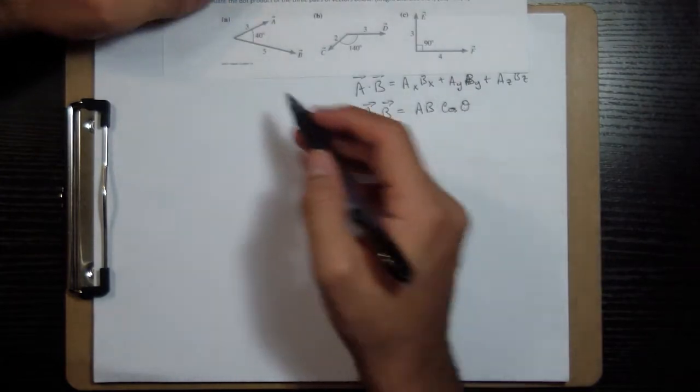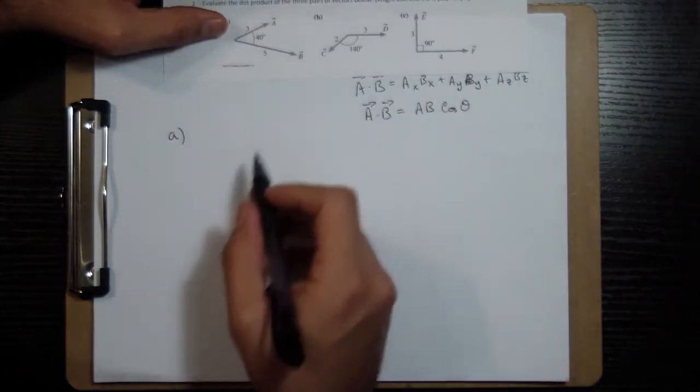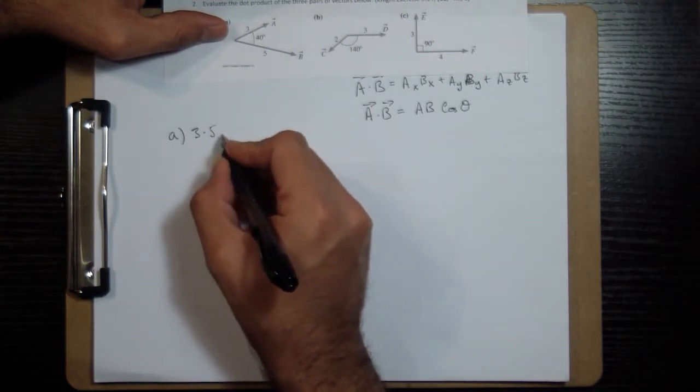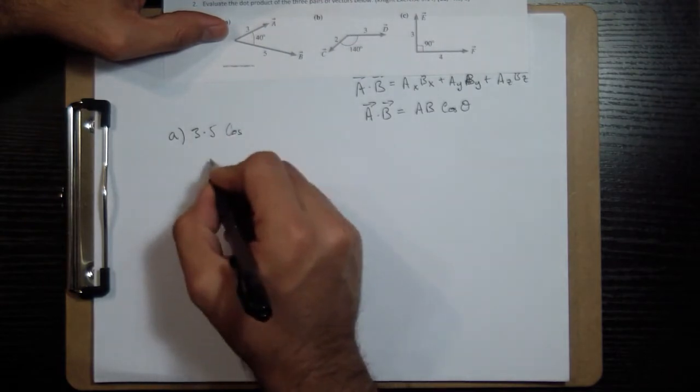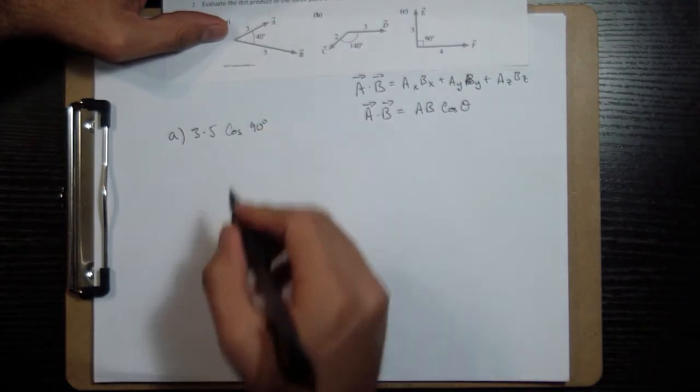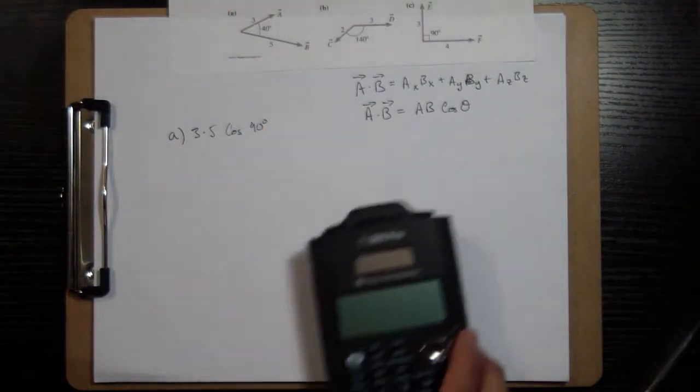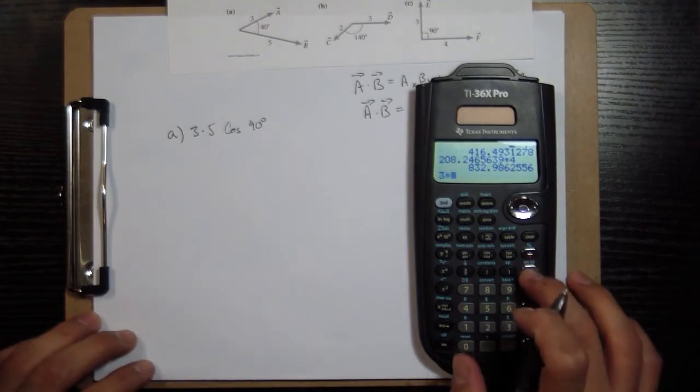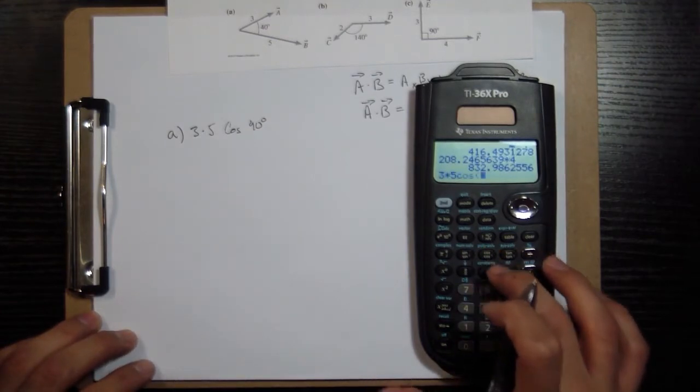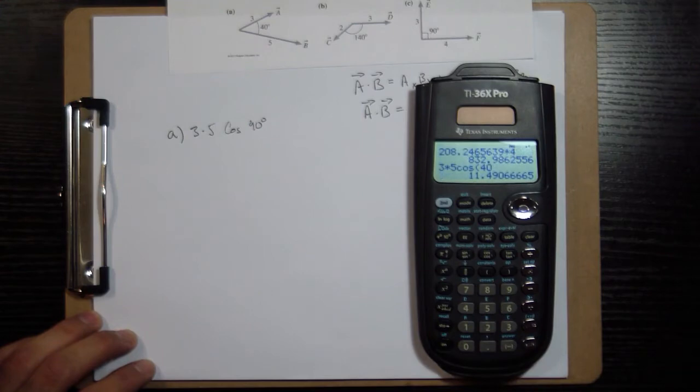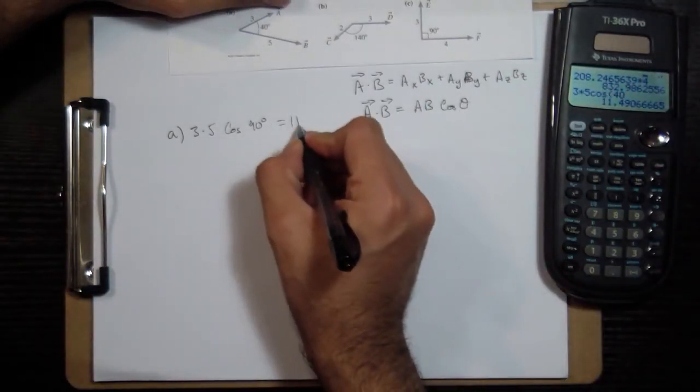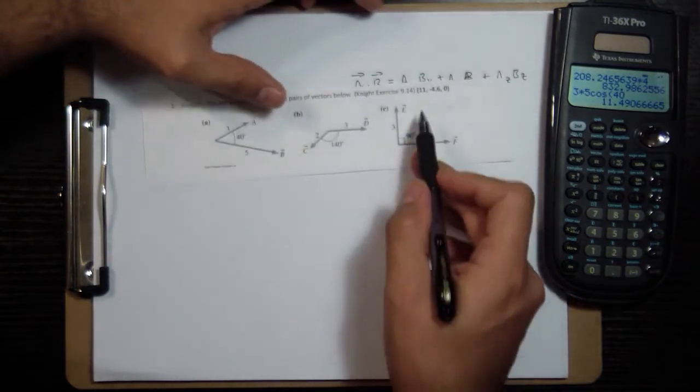So for A, the two magnitudes are three and five, and we want the cosine of 40 degrees. Three times five times the cosine of 40 degrees equals 11.5, which matches the 11 right there.